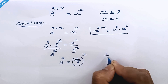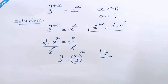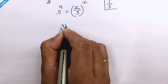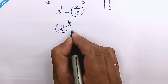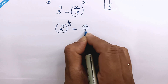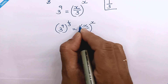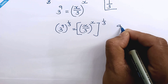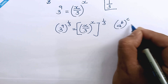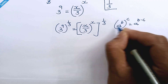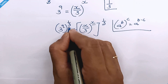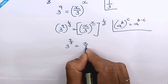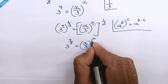Now let's raise both sides to the power of 1 over 3. So it will be 3 raised to 9, whole raised to 1 over 3, is equal to x over 3, whole raised to x, whole raised to 1 over 3. According to the rule, if we have a raised to b, whole raised to c, then it equals a raised to b times c. We can multiply the exponents, so it will be 3 raised to 9 over 3, is equal to x over 3, whole raised to x over 3.